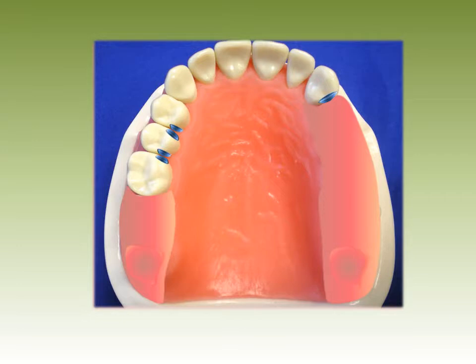When do we survey the diagnostic cast? First, we'll place our maxillary diagnostic cast on the survey table with the occlusal plane level to the table. Then we'll use our analyzing rod to examine the cast for potential guiding planes, locate and measure areas suitable for retention, locate interferences to the path of insertion, determine areas of recontouring, and determine the most favorable path of placement. After we do all this, we'll mark our heights of contouring and tripod our cast.